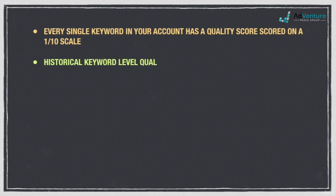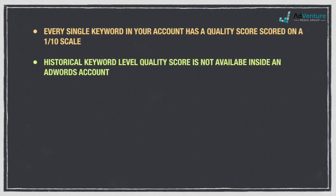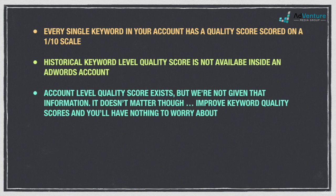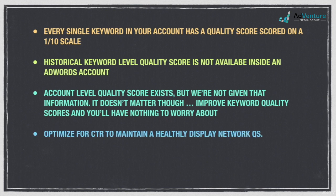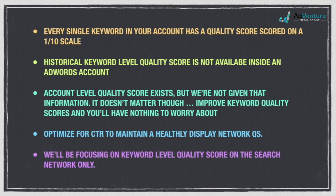You can't see historical quality score data from within your AdWords account — you can only see what your quality score is now, not what it was yesterday or how it changed over time. There are some great third-party tools and AdWords scripts that you can run to collect this data, and we'll talk more about that later. While Google themselves never confirmed that an internal account-level quality score exists, it's generally accepted that your overall account has a quality score that in some way impacts your overall performance. In any case, the better your keyword-level quality score is, the better your account-level quality score is going to be. For our purposes here, we'll be focusing on keyword-level quality score on the search network only.